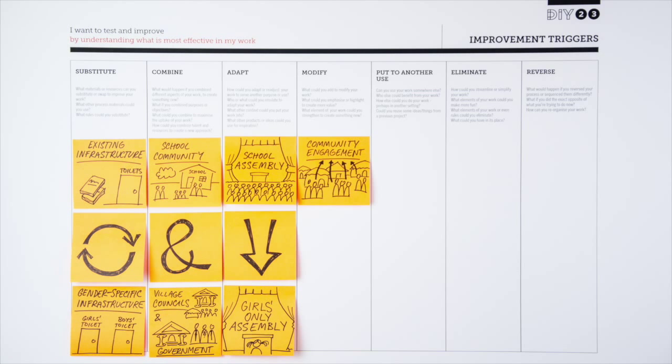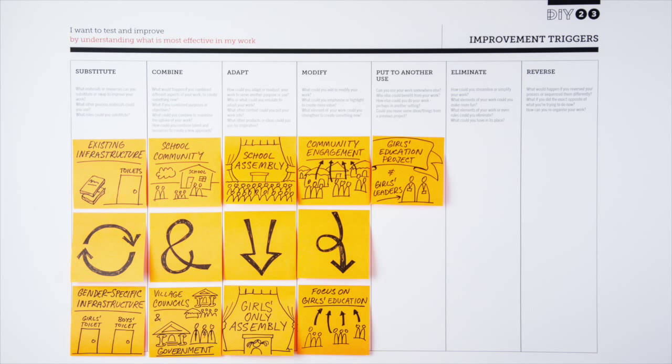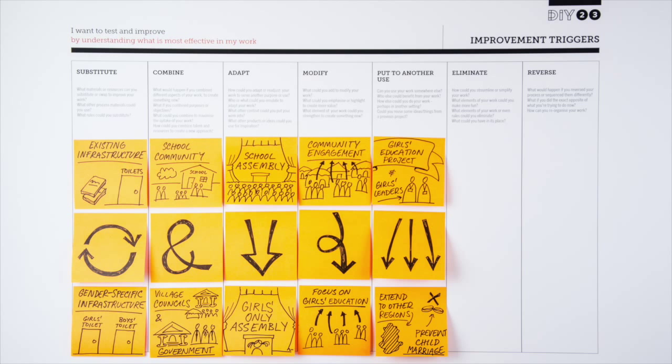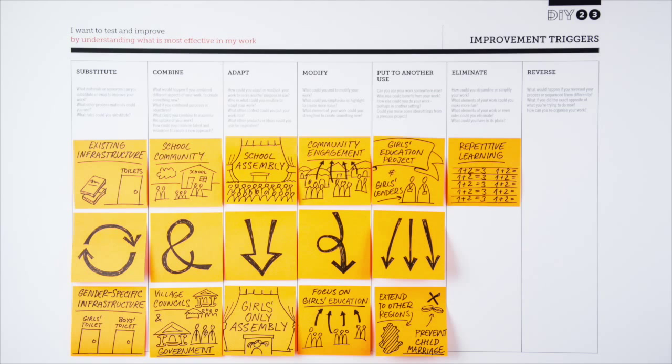The team thinks of adjustments to the existing system that would complement their project. Are there elements of their program that could help in other areas? Can girls' education be applied somewhere else? How can they simplify the idea?